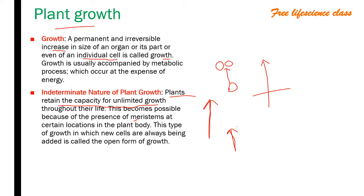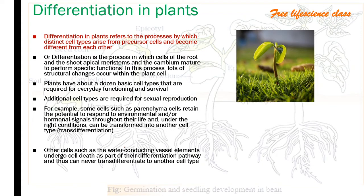Plants retain the capacity for unlimited growth throughout their life because of the presence of meristem. There are certain tissues called meristematic tissues which give the plant indefinite or unlimited growth. This type of growth — in which new cells are always being added — is called the open form of growth.